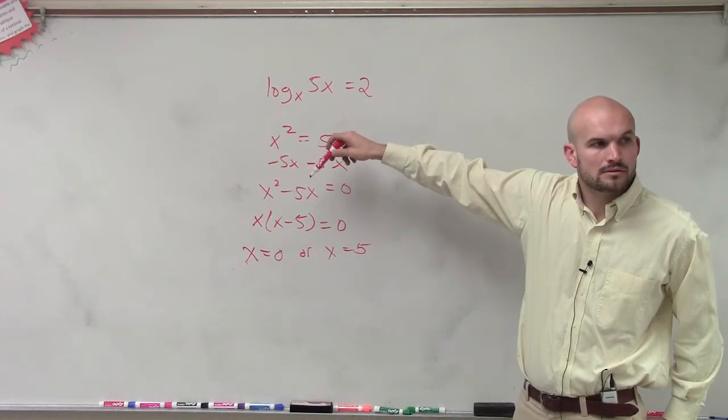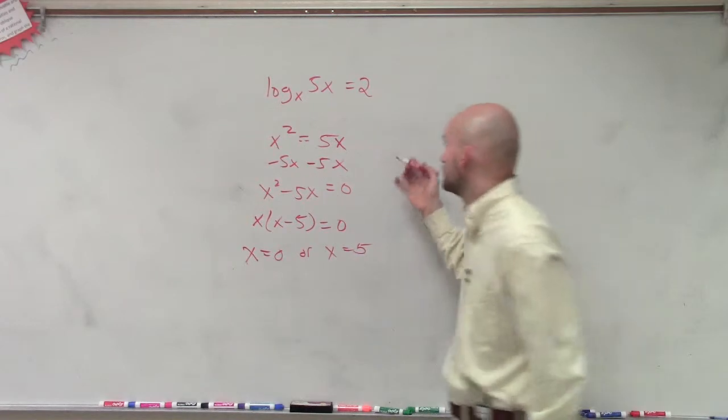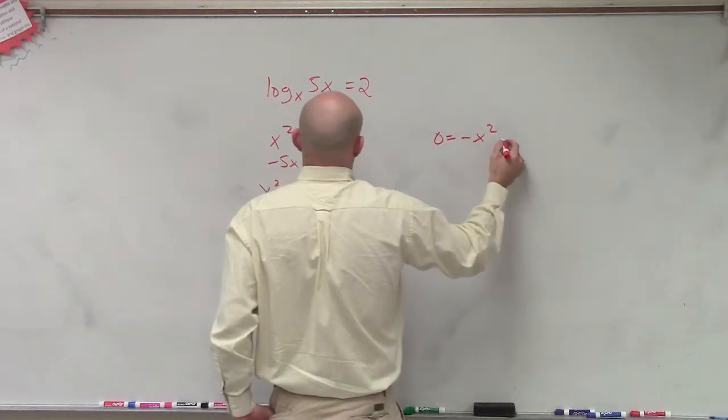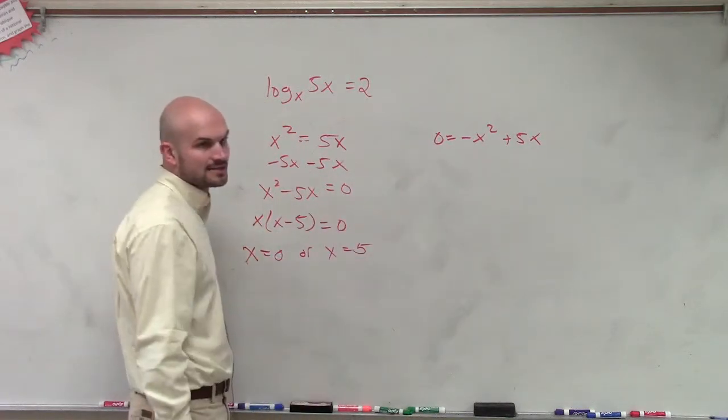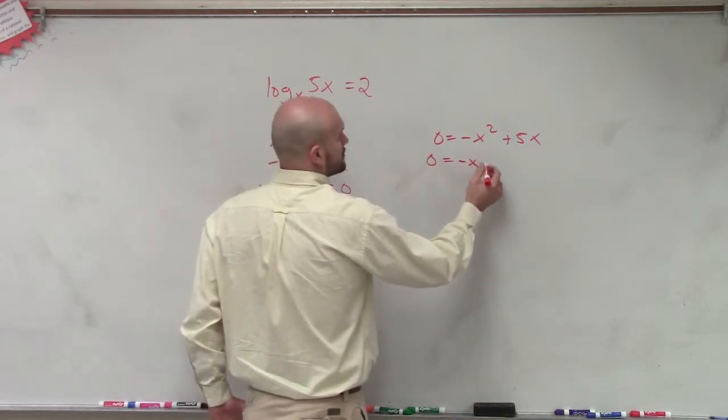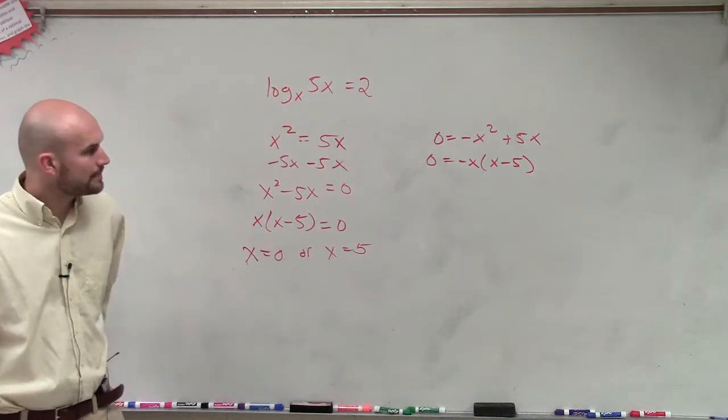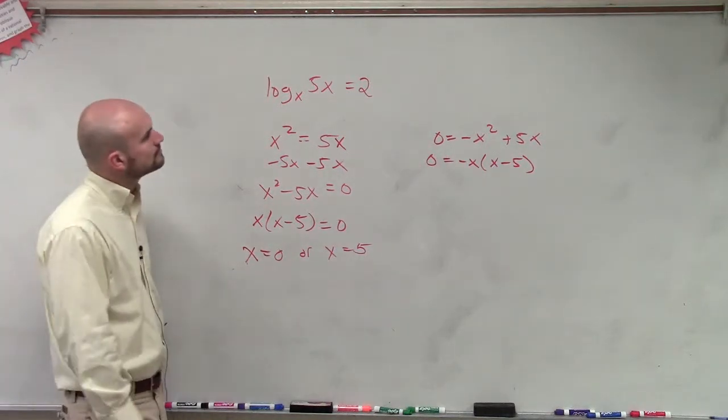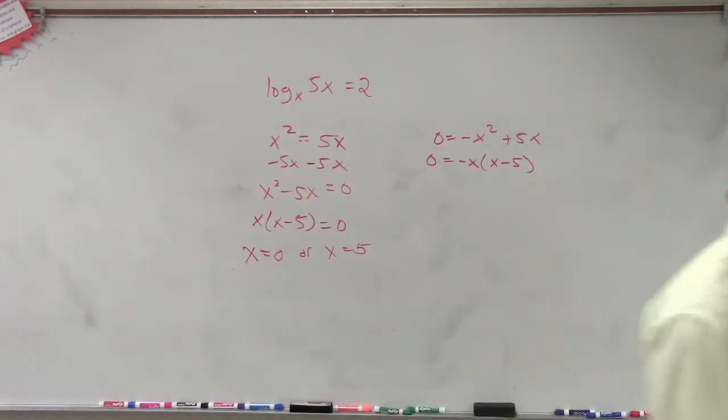You mean, instead of putting the x squared over there? It doesn't matter. You're still going to have to factor out an x, right? And then what I would do is factor out a negative x. It still gives the same answer. OK? And there you go.